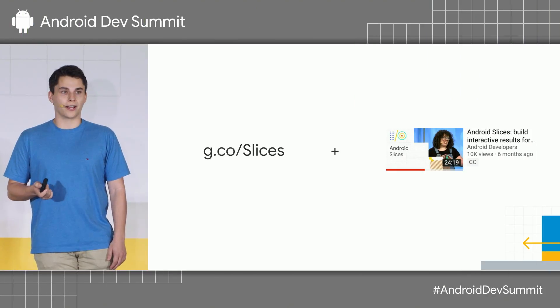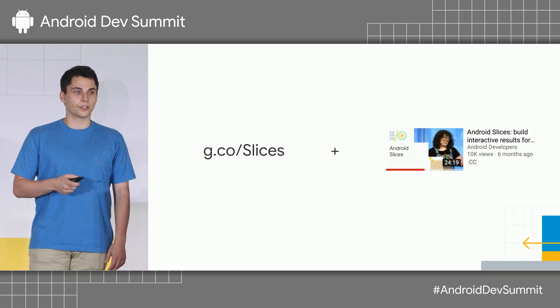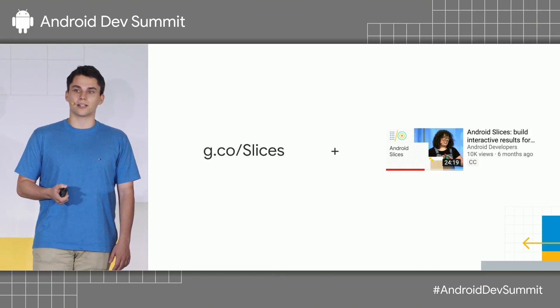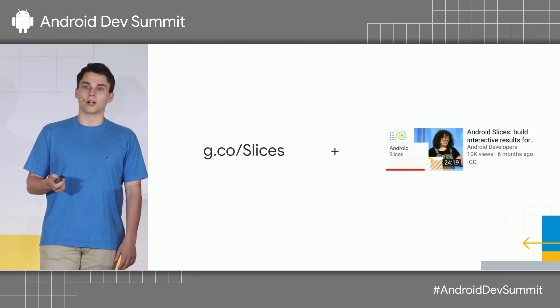Let's start by reintroducing Slices. We introduced Android Slices at this year's Google I/O, and you can find more documentation details at g.co/slices. You can also look up our I/O session video, Android Slices: Building Interactive Results for Google Search, which will give you a lot of information on constructing Slices, building a custom template, and building your UI for your Slices.